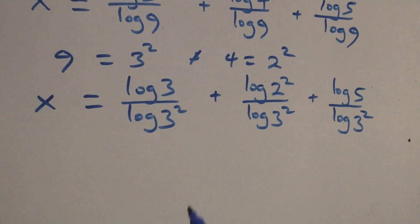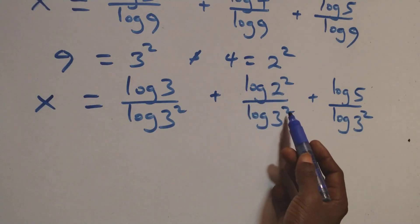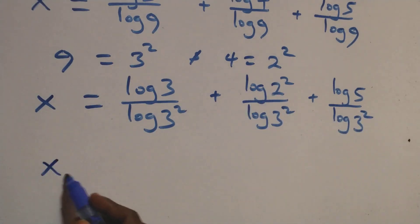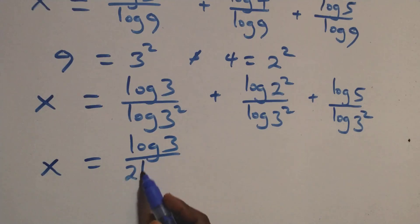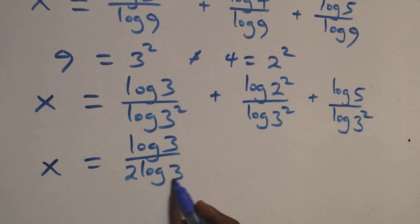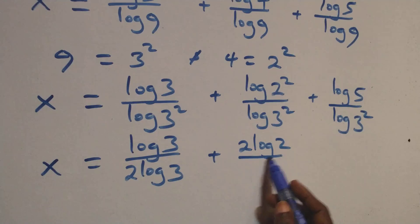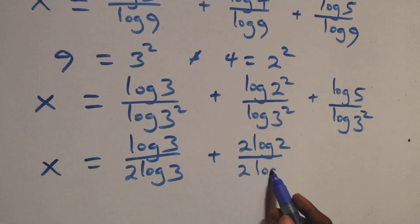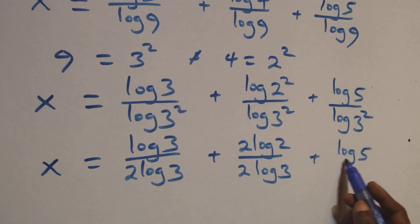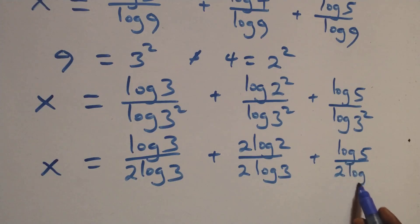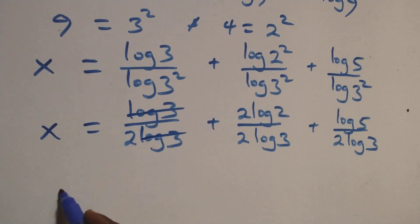We apply the power rule of logarithms: the exponent 2 comes out in front of each log in the denominator. So we have x = log(3)/(2·log(3)) + 2·log(2)/(2·log(3)) + log(5)/(2·log(3)).